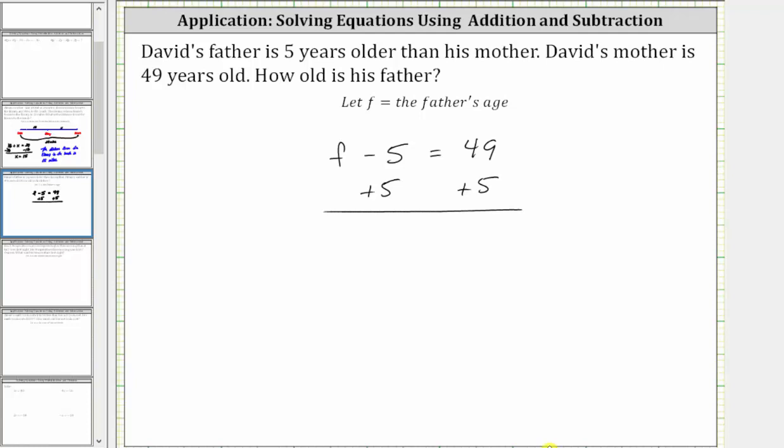Simplifying on the left, negative five plus five is zero. The left side simplifies to f. F is equal to 49 plus five, which is 54. We now know the father is 54 years old.